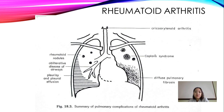In rheumatoid arthritis, pulmonary manifestations include Caplan's syndrome, diffuse pulmonary fibrosis, rheumatoid nodules in the lung, obliterative disease of the airway, and pleurisy with pleural effusion — though pleural effusion is rare.